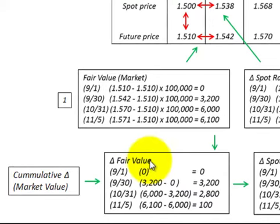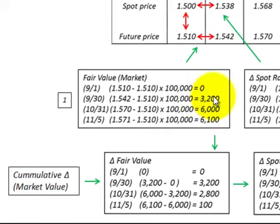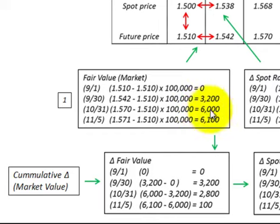Next, to determine our change in fair value, we're looking at a cumulative change in market value. For the first period of 9-30, the fair market value was $3,200 minus the zero value at 9-1, giving a $3,200 change in fair value. For 10-31, we take the $6,000 fair value and subtract the $3,200 fair value from 9-30, giving a $2,800 change in fair value. For the last period at 11-5, we take the $6,100 fair value and subtract the $6,000 from 10-31, giving a $100 change in fair value.